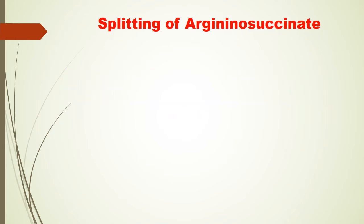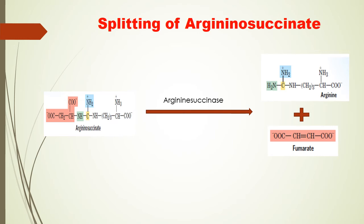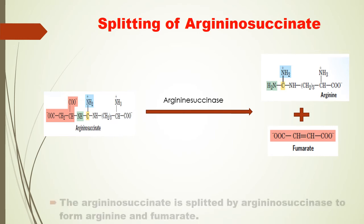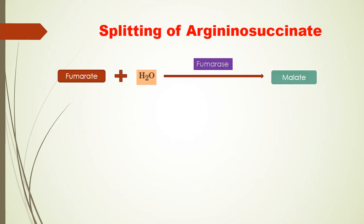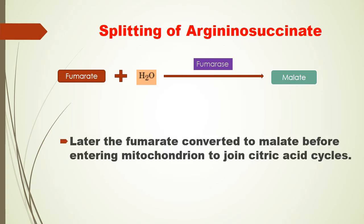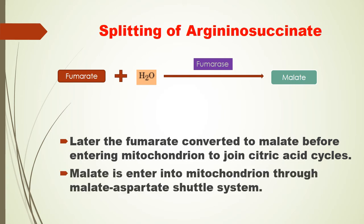Splitting of argininosuccinate. The argininosuccinate is cleaved by argininosuccinase to produce arginine and fumarate. Fumarate is converted to malate before entering the mitochondrion to join the citric acid cycle. Malate enters the mitochondrion through the malate-aspartate shuttle system.